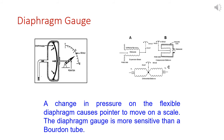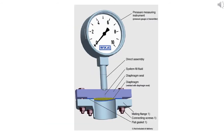A change in pressure on the flexible diaphragm causes the pointer to move on the scale. A diaphragm gauge is more sensitive than a Bourdon tube gauge. It is widely used in the field in applications like pressure transmitters, pneumatic and electronic transmitters, pressure sensors, and pneumatic pressure control valves. If you get a chance to visit an instrumentation workshop, observe how the diaphragm gauge works and where it is used. It uses a diaphragm seal instead of a Bourdon tube.